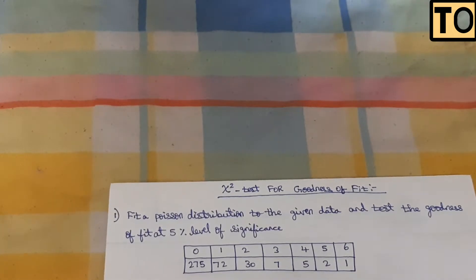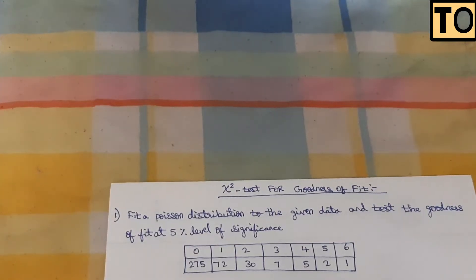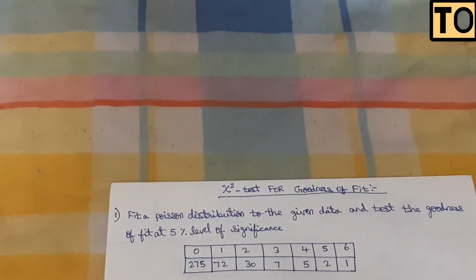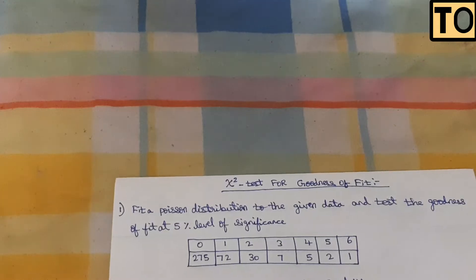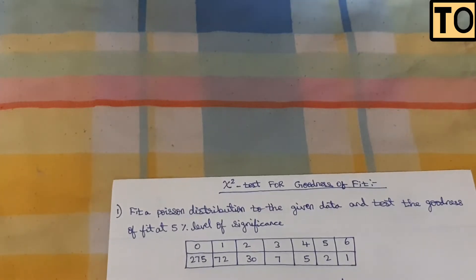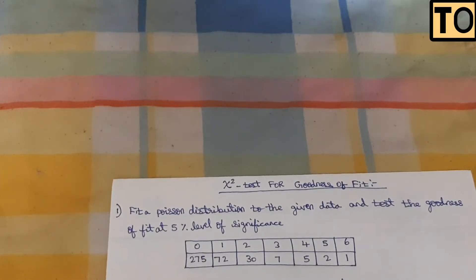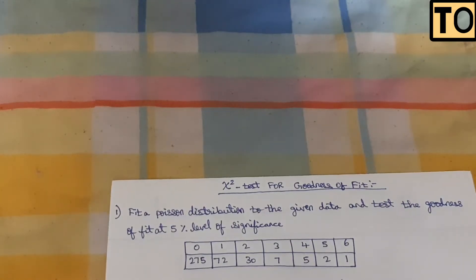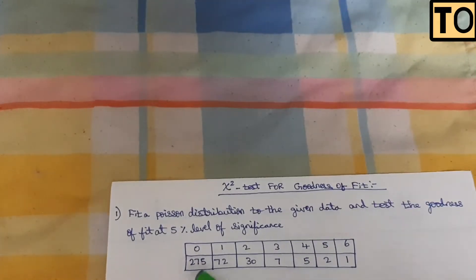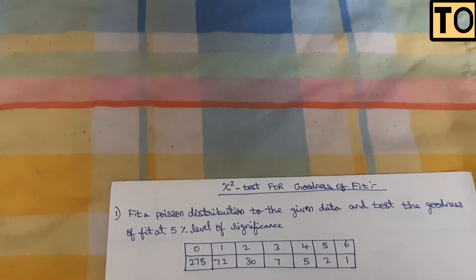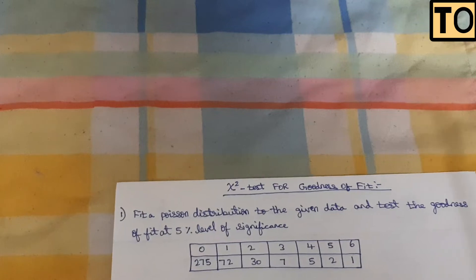You can also have Part A and Part B in these questions — that is the Chi-Square Test for Goodness of Fit. Part A: how to solve this problem. First question: fit the Poisson Distribution to the given data and test for goodness of fit at the 5% level of significance.